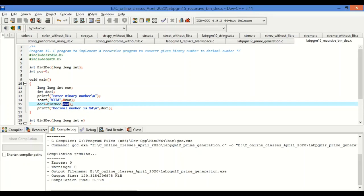Suppose I enter 110. What is the decimal equivalent? It is 6. So you have to get the value 6 here. That will get displayed in the main.